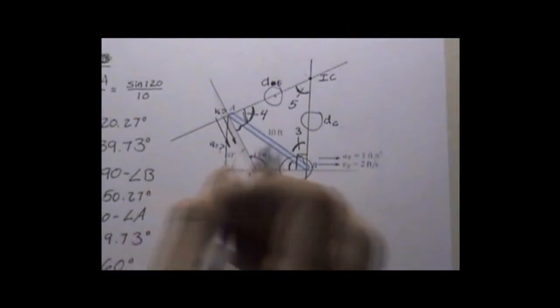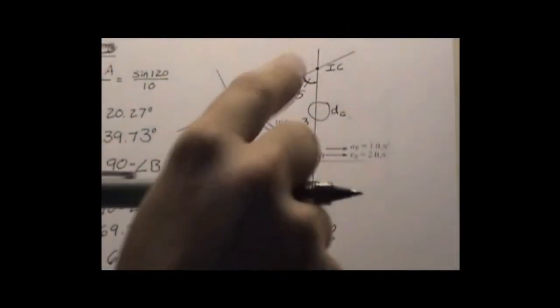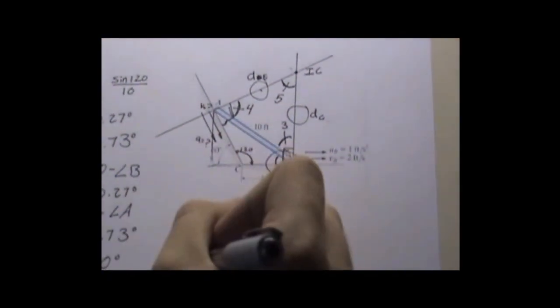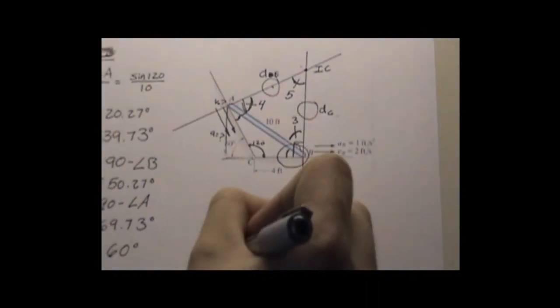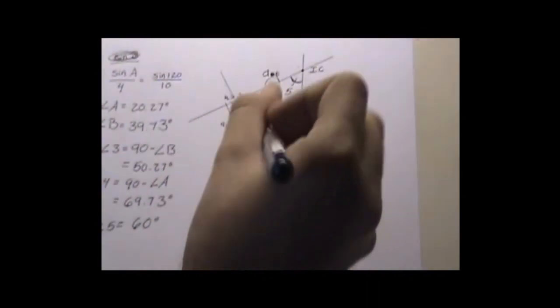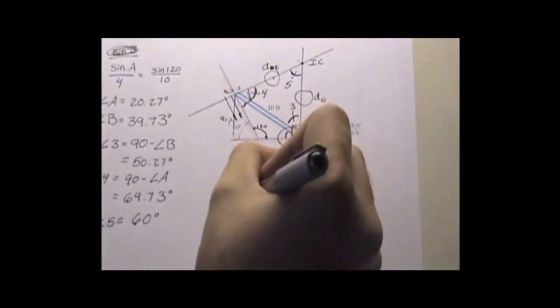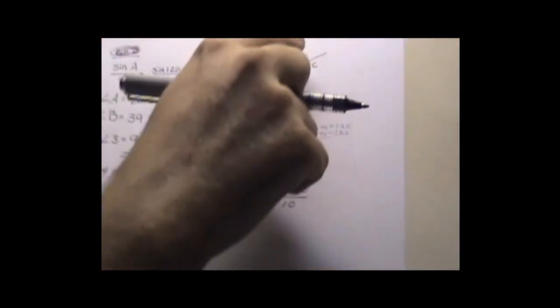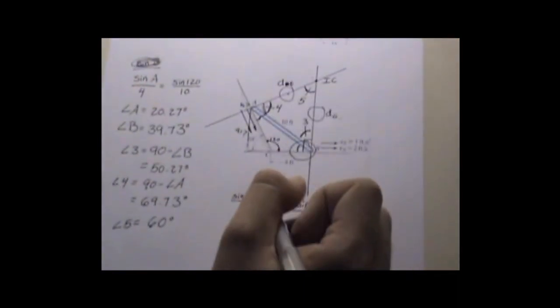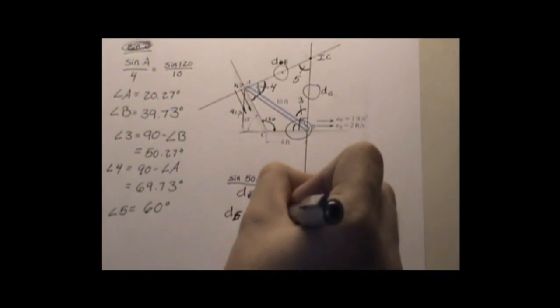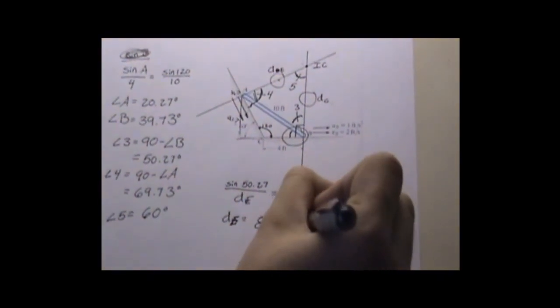We want to use something that we know, so we only have one unknown in the problem, which is distance D. We'll figure this out, distance D, not distance D, distance E. Distance E, this one at the top right here, ends up being 8.88 feet. We're doing this all in feet because of this.